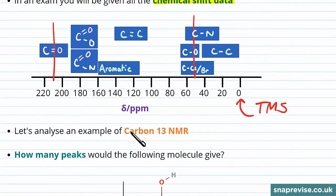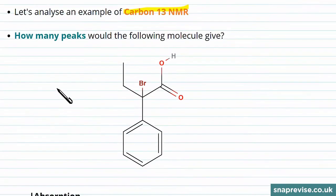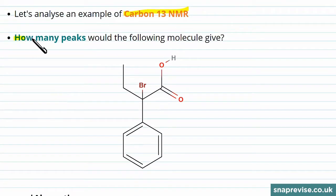So now let's analyze an example of carbon-13 NMR by thinking what one would look like for a given molecule. Let's think about how many peaks this following molecule will give, which has an aromatic ring and then branches coming off it.